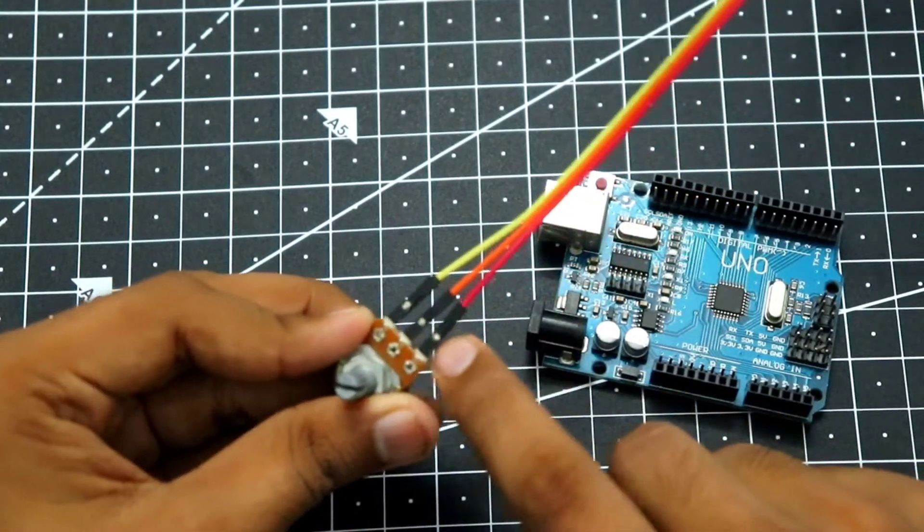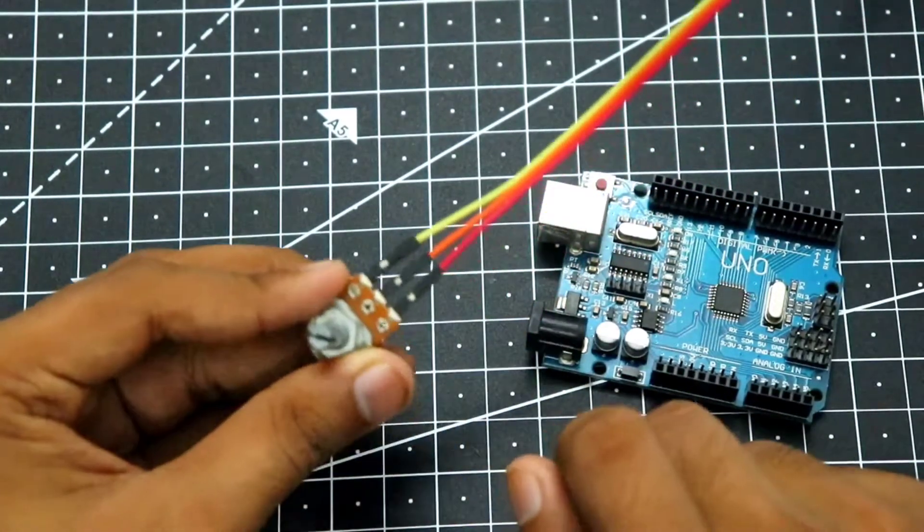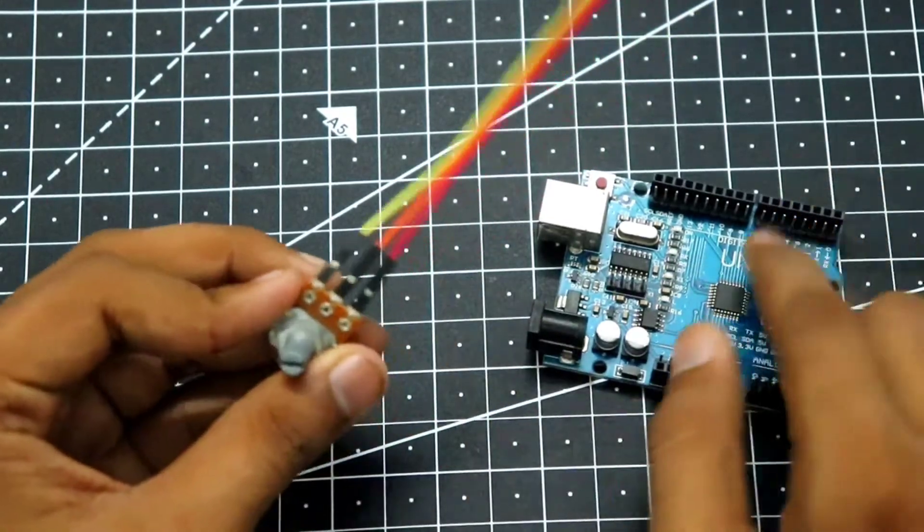It does not matter where you connect them because the red wire can be also the negative wire and the yellow wire can be the positive. So it doesn't matter which orientation you connect them. And the middle pin must be the signal wire for the Arduino.